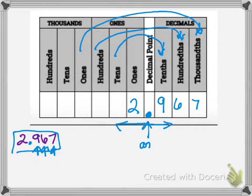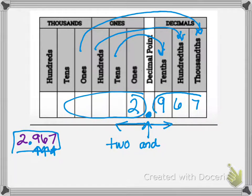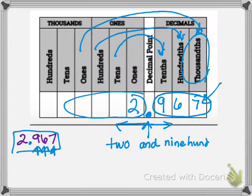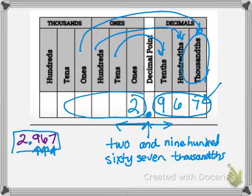When you say your decimal, you're going to say the word AND. You simply say what's on the left side of the decimal like you normally would — so that's two. Then you read the right side just as you see it: nine hundred sixty-seven. And then you say the place value of the last digit — nine hundred sixty-seven thousandths. So it is two and nine hundred sixty-seven thousandths.